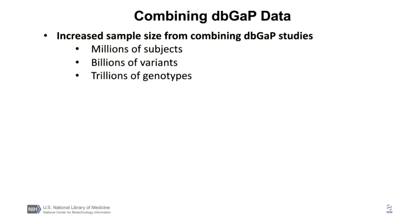To accomplish that goal, alpha will be combining the vast amount of dbGaP data that includes millions of subjects, billions of variants, and trillions of genotypes.